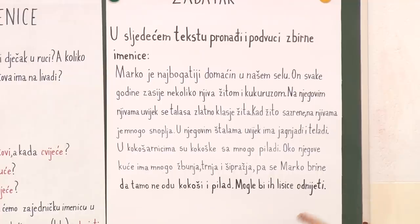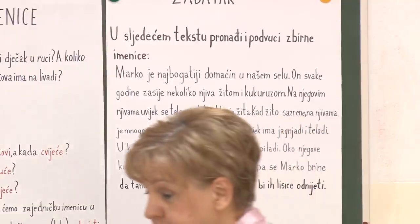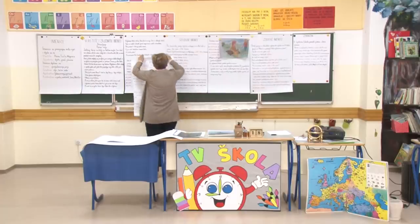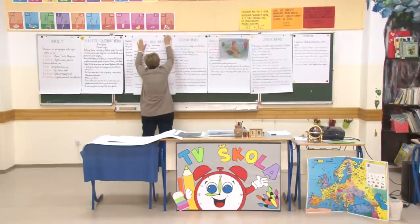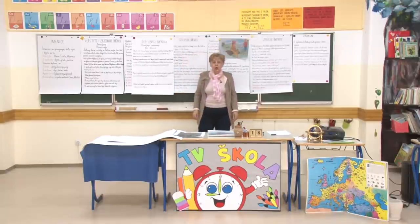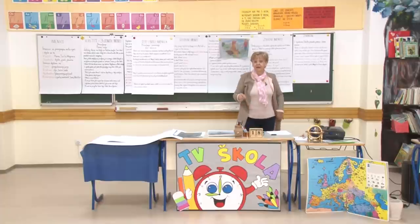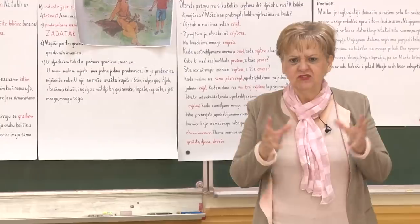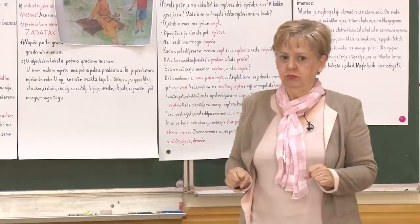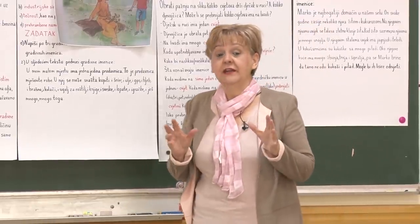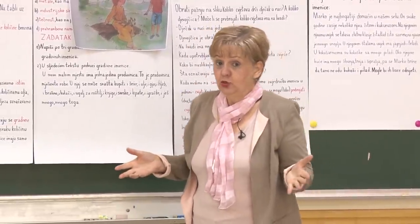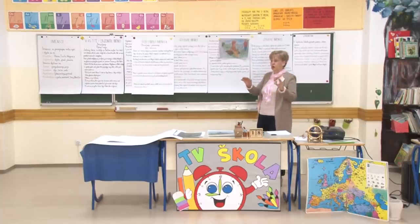Marko je najbogatiji domaćin u našem selu. On svake godine zasije nekoliko njiva žitom i kukuruzom. Na njegovim njivama uvijek se talasa zlatno klasje žita. Kad žito sazre, na njivama je mnogo snoplja. U njegovim štalama uvijek ima jagnjadi i teladi. U kokošarnicima su kokoške sa mnogo piladi. Oko njegove kuće ima mnogo žbunja, trnja, šipražja, pa se Marko brine da tamo ne odu kokoši i pilad. Mogle bi ih lisice odmijeti.